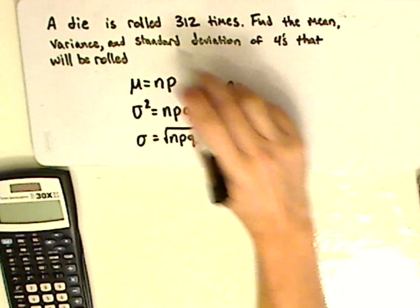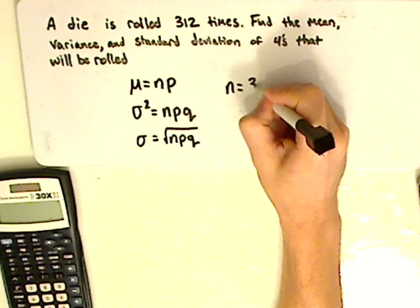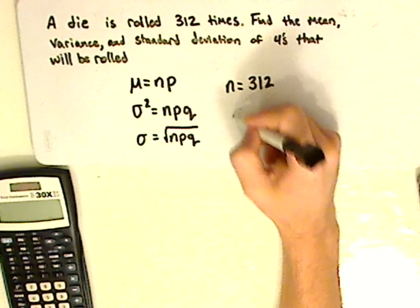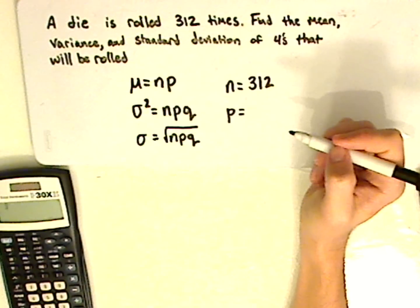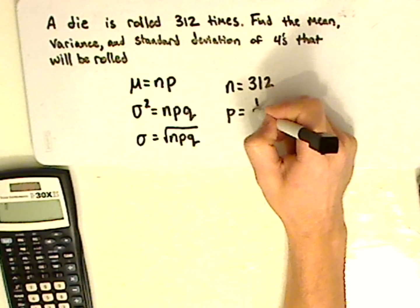So n would be 312. p, the probability of success, would be 1 over 6.